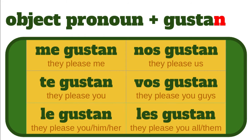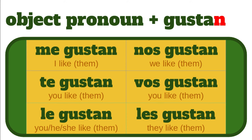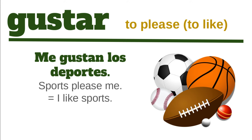And again, if we're talking about more than one thing, we add an N to the end of gustar, so that it becomes gustan. Me gustan — they please me, or I like them. Te gustan — you like them. Le gustan — you, he, or she likes them. Nos gustan — we like them. Vos gustan — you guys like them. Les gustan — they like them. In a sentence: me gustan los deportes — sports please me, or in other words, I like sports.